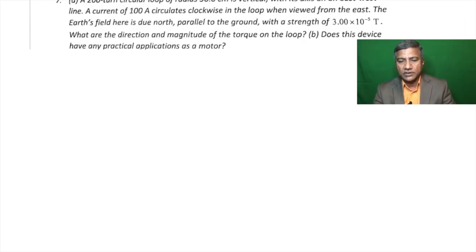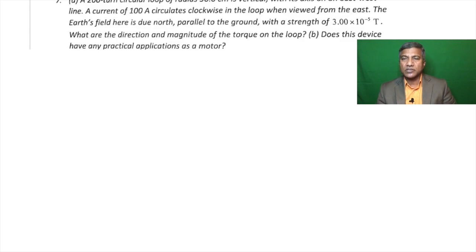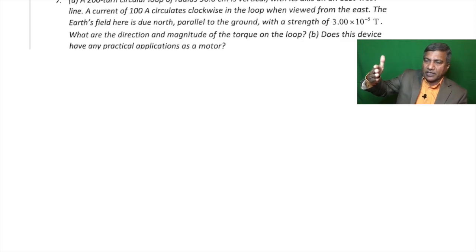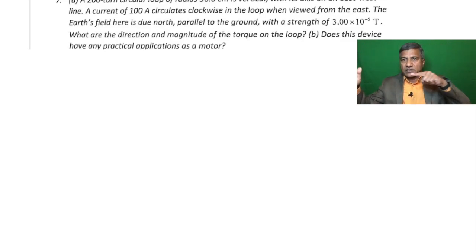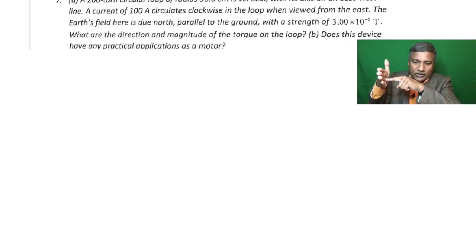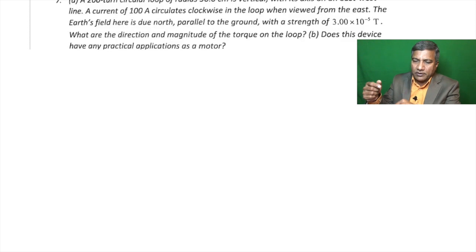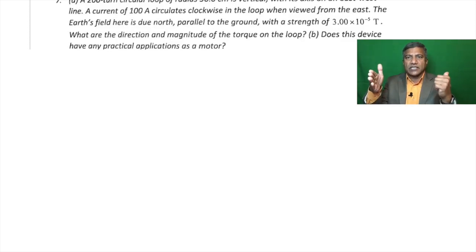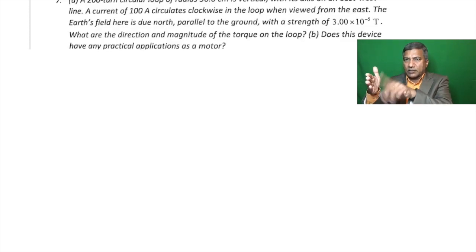Question 7: A 200-turn circular loop of radius 50 cm is vertical with its axis on an east-west line. A current of 100 amperes circulates clockwise in the loop when viewed from the east. The Earth's field is due north, parallel to the ground.